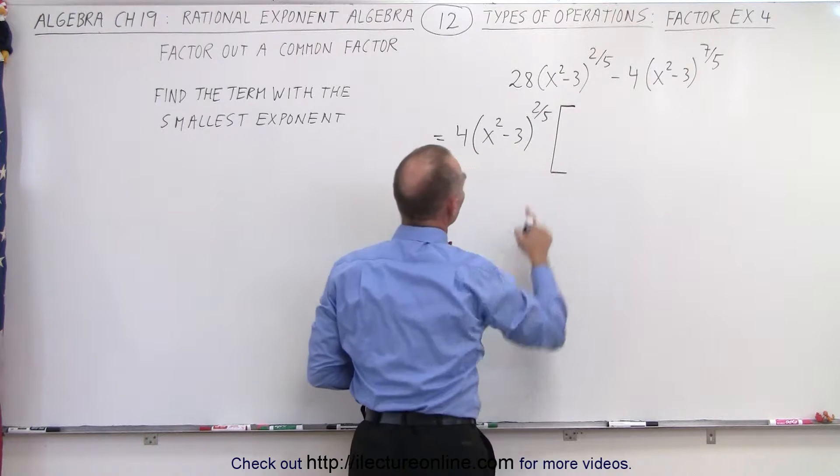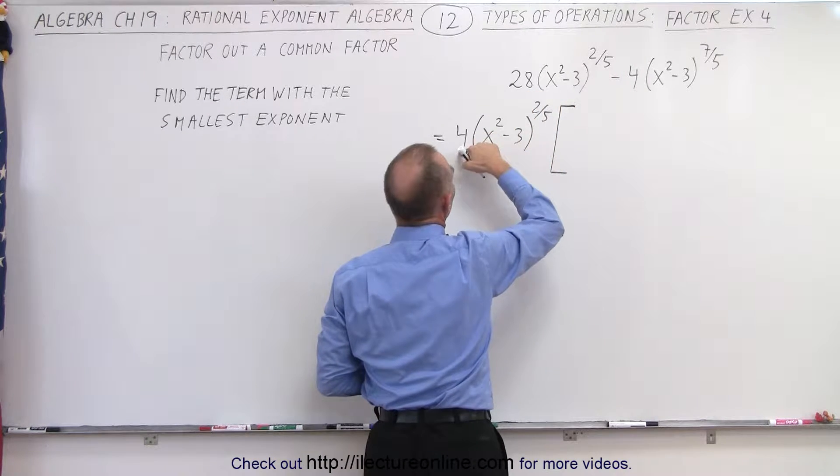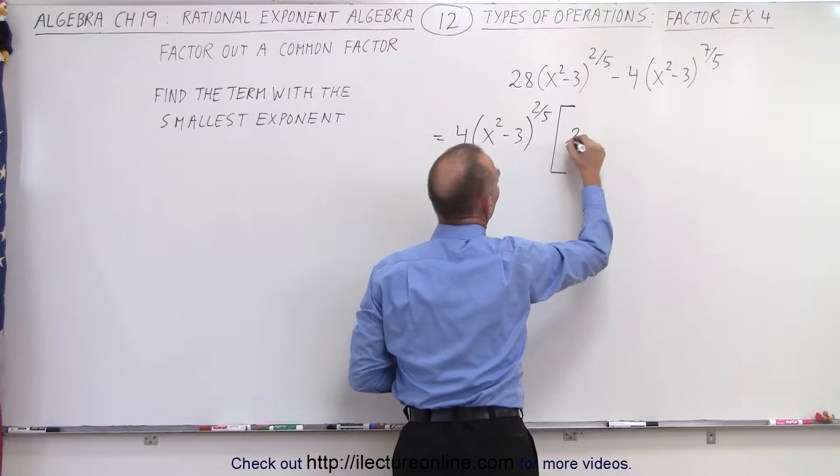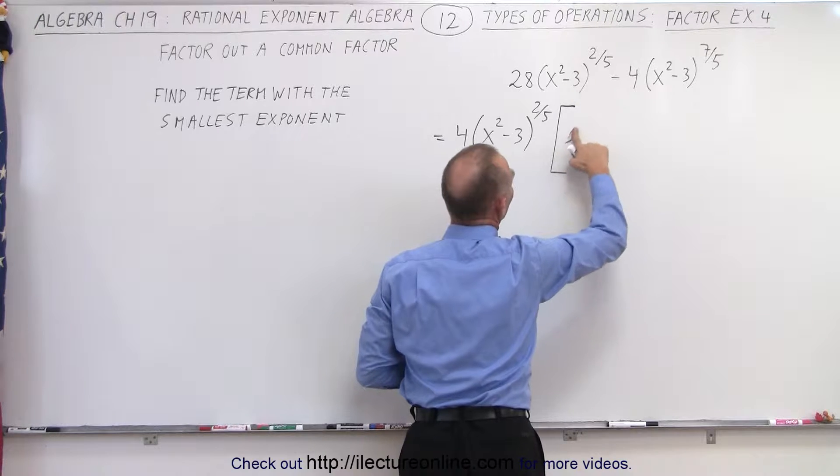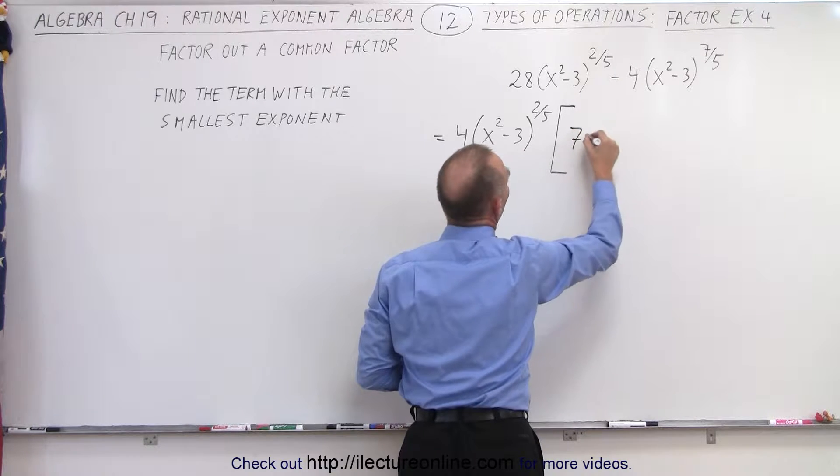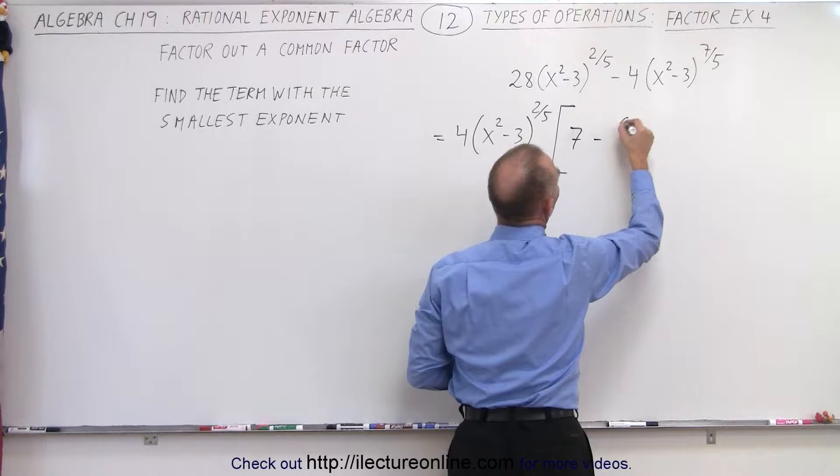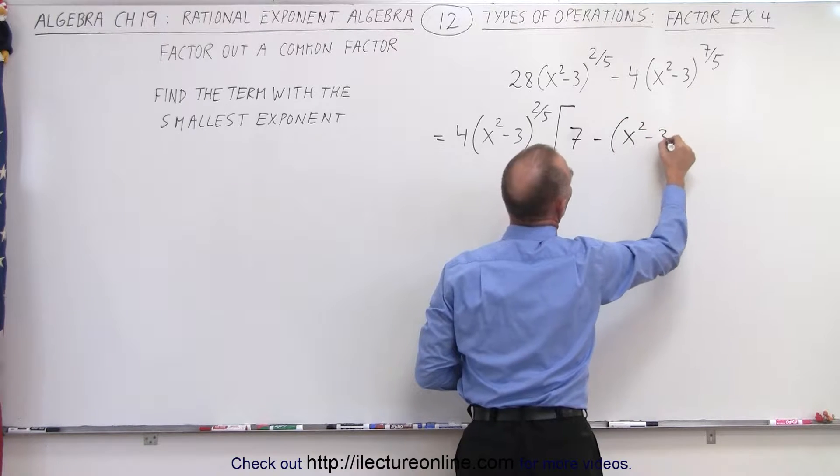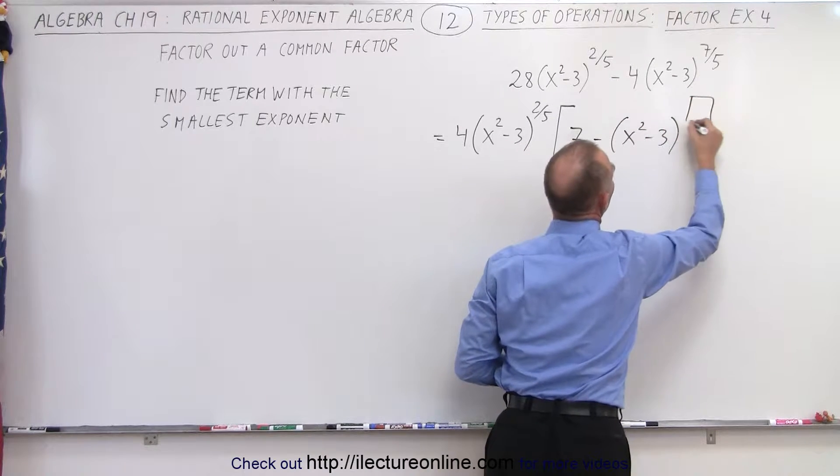And then let's see what we have left. Over here, 4 times 7 is 28, so we have, well, not 28, but 7 left. So this becomes 7 minus, and here we have, x squared minus 3 to some unknown exponent.